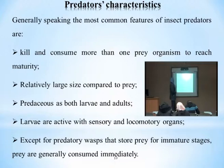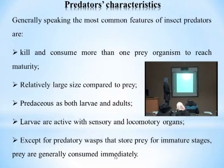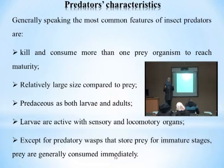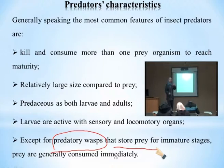Larvae are active with sensory and locomotory organs — most predatory larvae can move and have sensory structures to detect prey movement. Except for predatory wasps, prey is originally consumed immediately — predators consume their prey on the spot the moment they catch it. The exception is predatory wasps, which store prey in a cache for feeding at immature stages later.